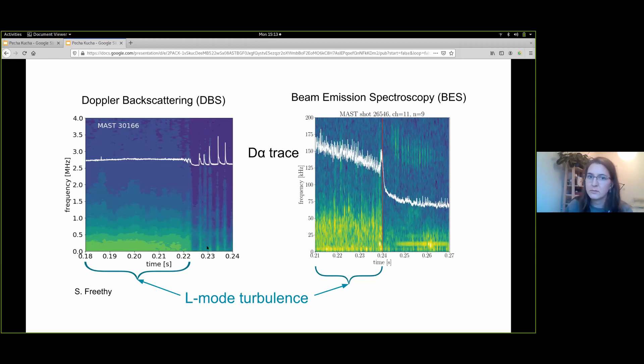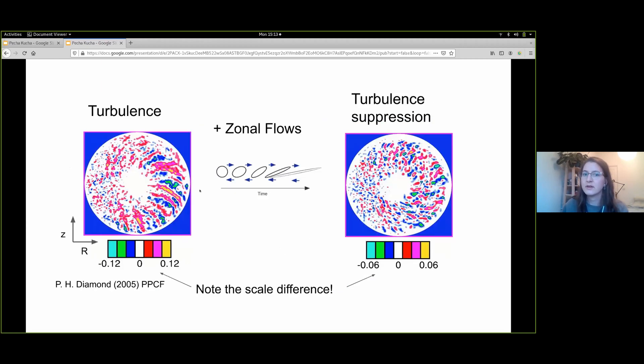In terms of microscopic physics, the cross-field transport is dominated by non-linear fluctuations of the plasma parameters called turbulence. L-mode plasmas have high levels of turbulence, and in H-mode this turbulence is suppressed. The turbulence can be seen in data from diagnostics such as DBS and BES.